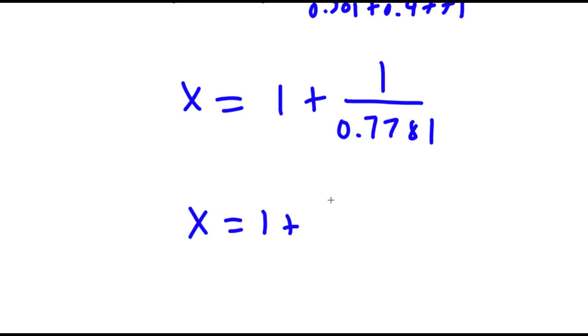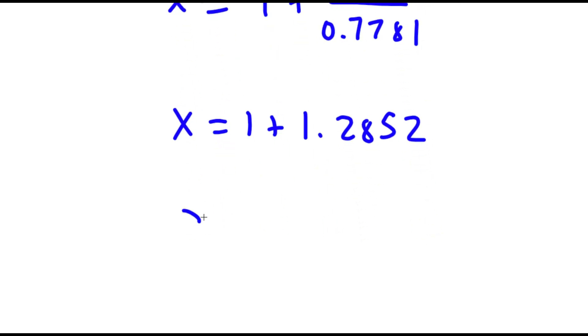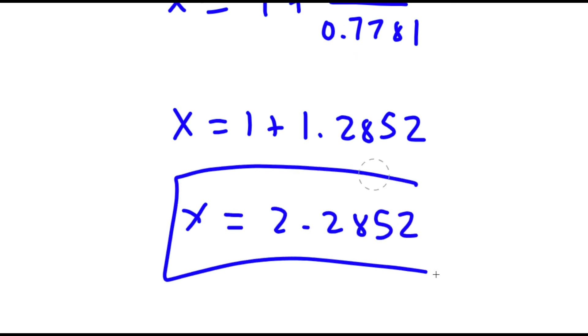Now 1 over 0.7781 is equal to 1.2852, so 1 plus 1.2852 is equal to 2.2852. So this is my answer.